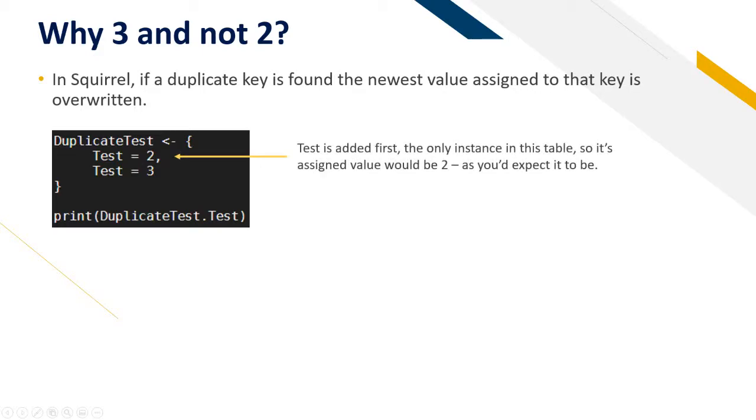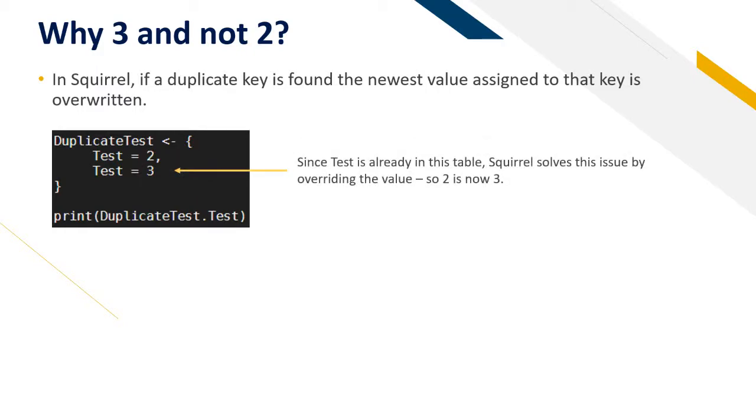Test is added first, the only instance in this table, so it's assigned the value of two as you expect it to be. Since test is already in this table, Squirrel solves this issue by overriding the value. So two is now three.